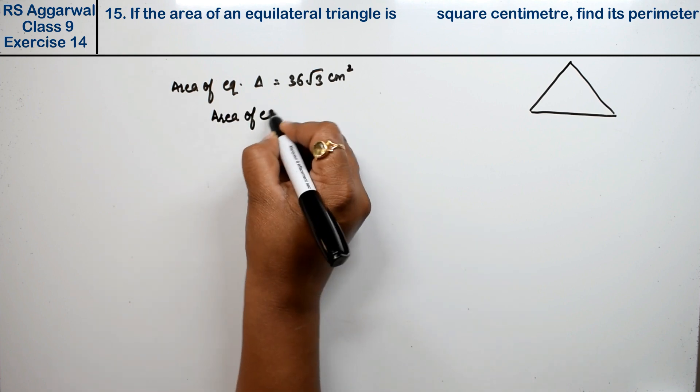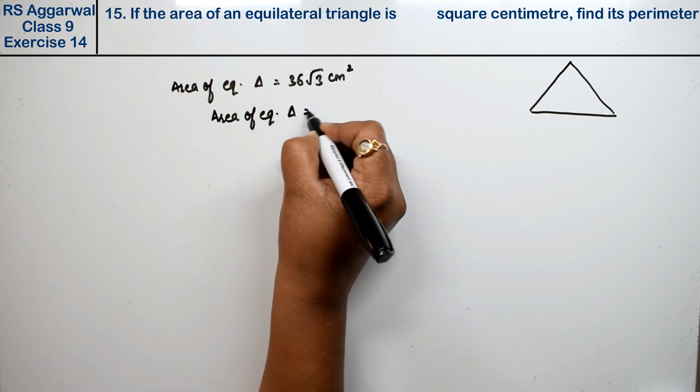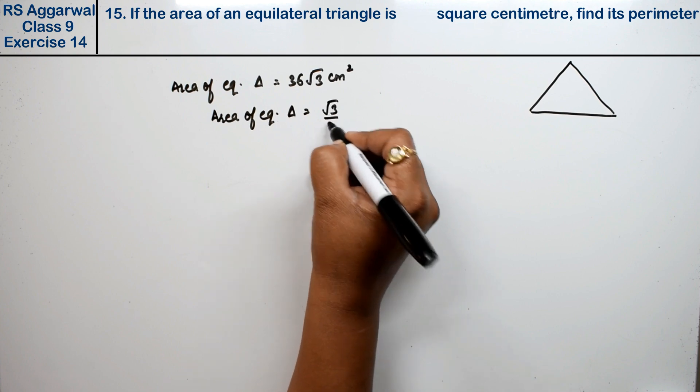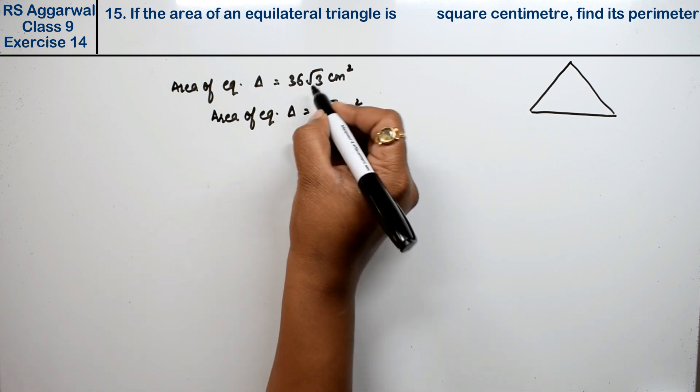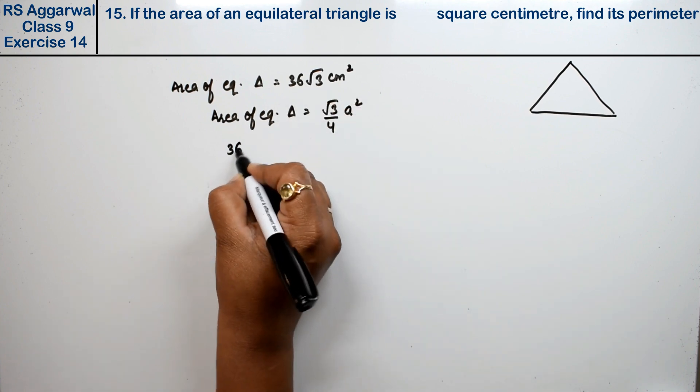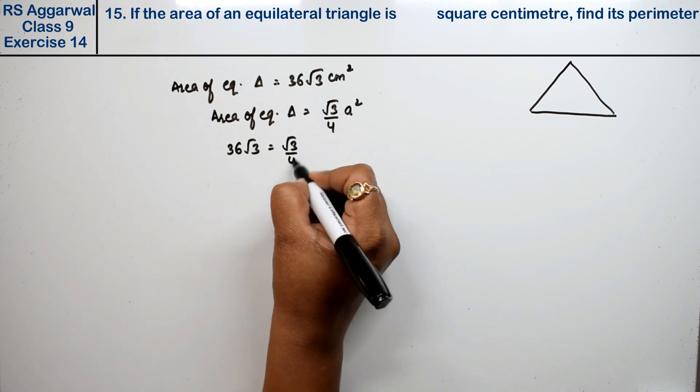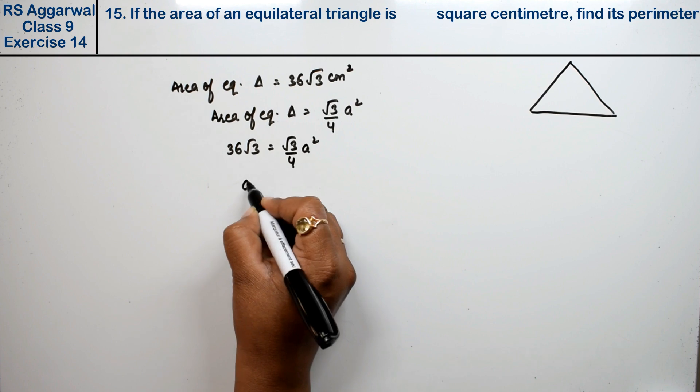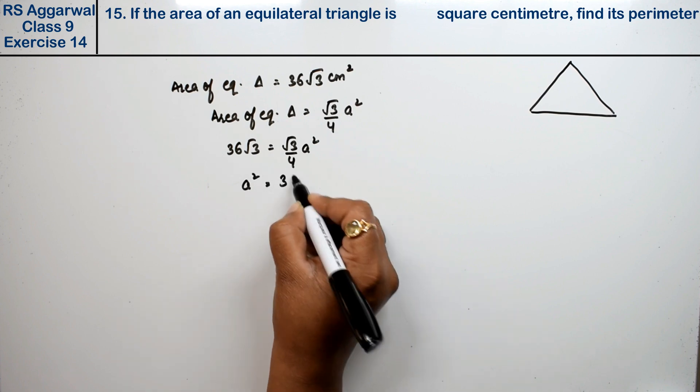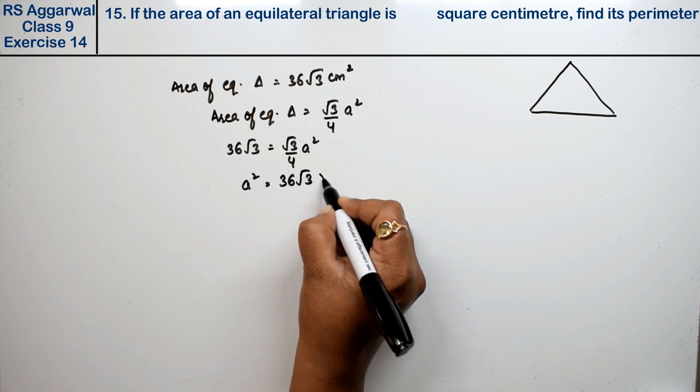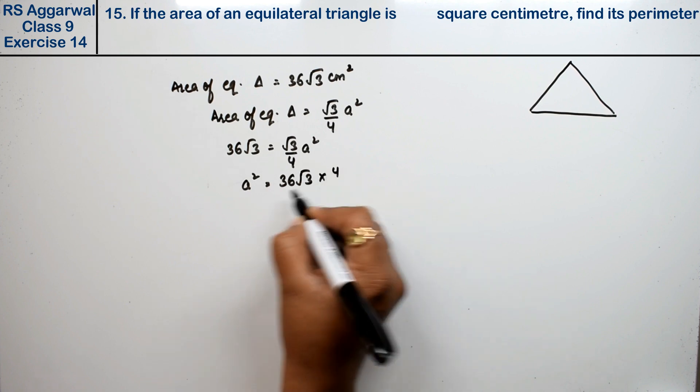The area of equilateral triangle equals root 3 upon 4 a square. This is given to us: 36 root 3 equals root 3 upon 4 a square. Now a square is on one side, 36 root 3 is on the other side, 4 multiplied and root 3 divided.